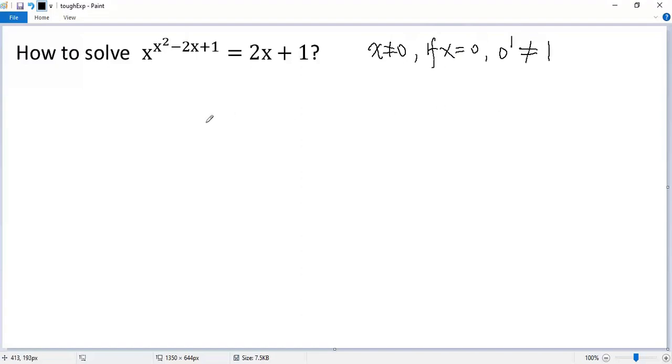Now let's rewrite the left side using exponent rule so we get x to the power of x squared plus 1 over x to the power of 2x the right side 2x plus 1. Both sides multiplied by x to the power of 2x so we get x to the power of x squared plus 1 equals 2x plus 1 times x to the power of 2x.